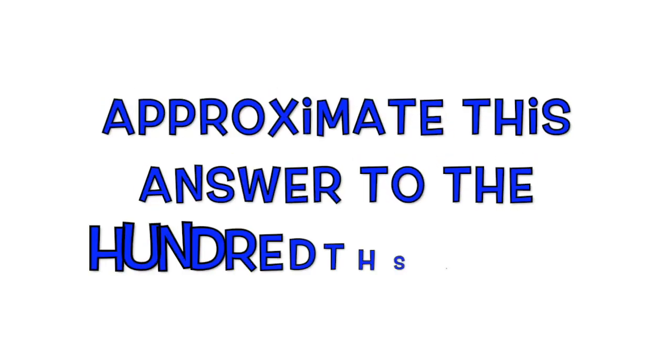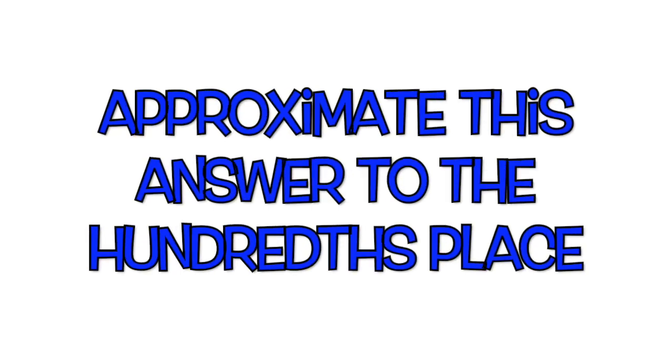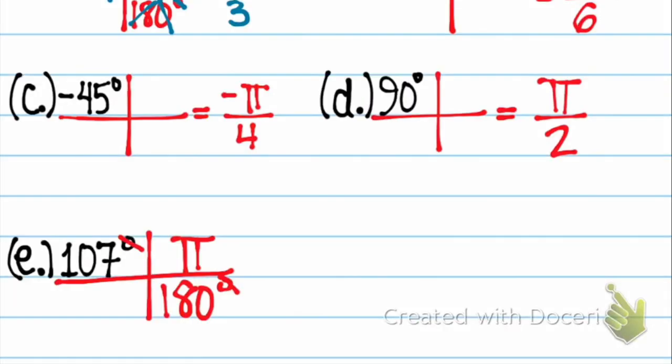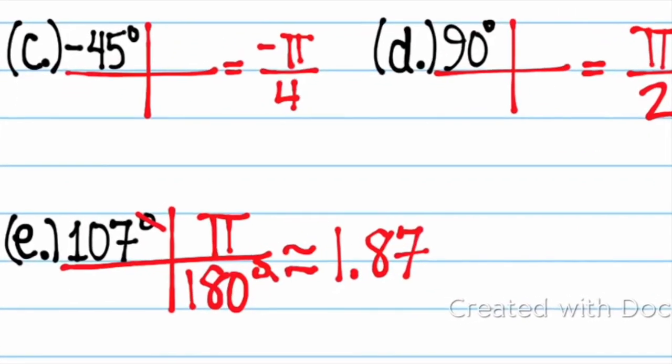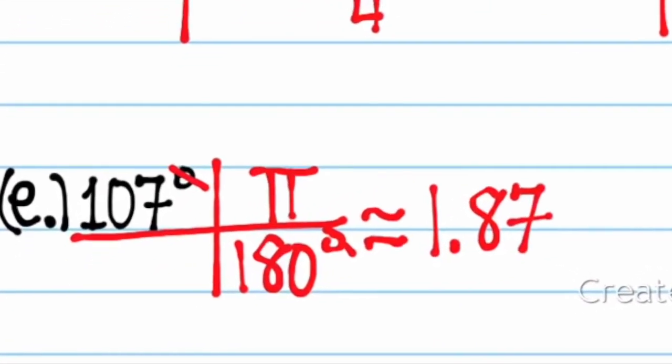Let's look at example e. After converting 107 degrees to radians, crossing out degrees symbols, and writing out your answer in terms of pi, I could leave my answer as 107 pi over 180. But once you put it in the calculator, you should get approximately 1.87 radians. You should use the pi button for a question like this.